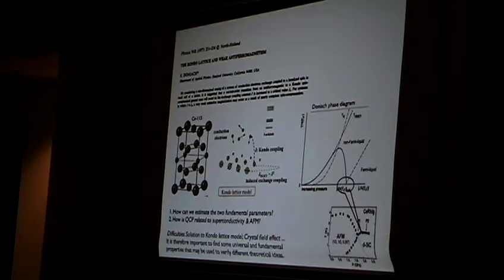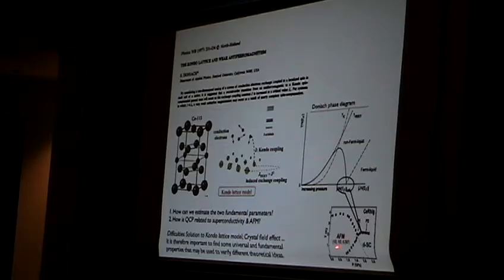The question here I want to ask is: how can we estimate these parameters? That would be a good check of the theory. And then, is the quantum critical point here related to the superconductivity, which is also interesting in high-Tc? The difficulty is we don't have a solution to the Kondo lattice model, and there's crystal field effects here. So I think it's important to find some universal and fundamental properties that may be used to verify different theoretical ideas without going into the details like calculations involving crystal field effects.